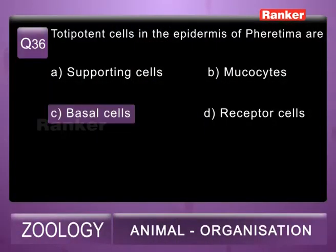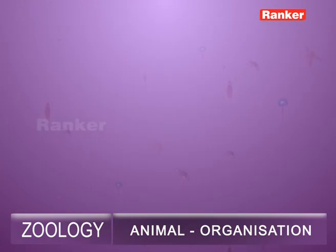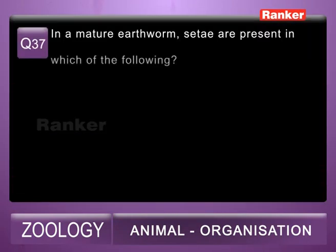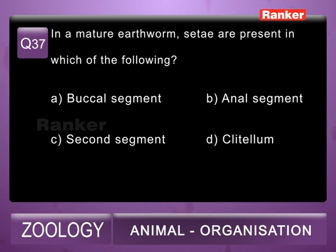So the 36th question correct answer is C, basal cells. 37th question: in a mature earthworm, setae are present in which of the following?